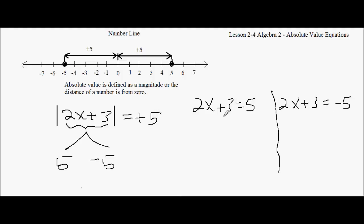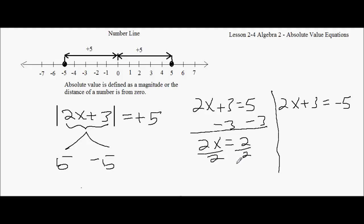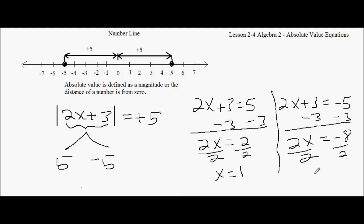Then we solve both. For the first equation, I subtract 3 from both sides — the 3's cancel — and I get 2x equals 2. Divide by 2 and I get x equals 1. On the second equation, I subtract 3 from both sides and get 2x equals negative 8. Divide by 2 and I get x equals negative 4. So my two answers are 1 and negative 4.